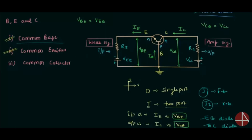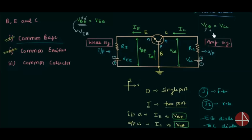There is one very important thing to note. You cannot write VBE as VEB if you follow proper nomenclature, because B is at higher potential and E is at lower potential, so B will come first then E. In the same way, the collector is at higher potential and base is at lower potential, so in the representation C will come first and later B. These are the important representations for input voltage and output voltage.